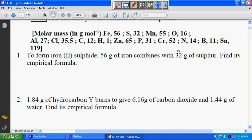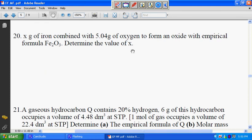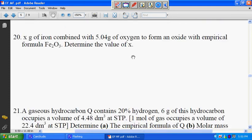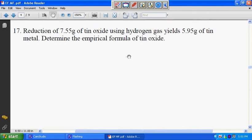So we go back to the question. We have 5.95, that will give you 5.95 divided by 119. That is the number of moles of tin.